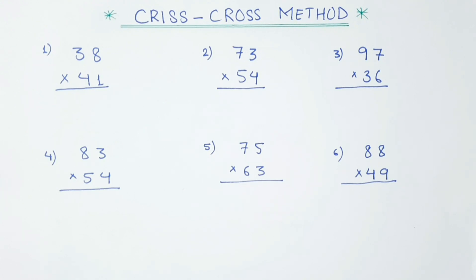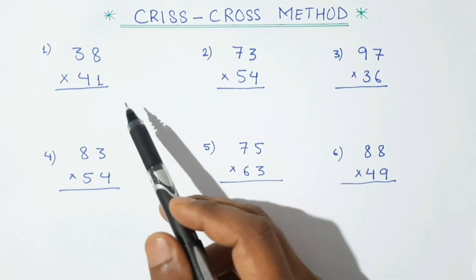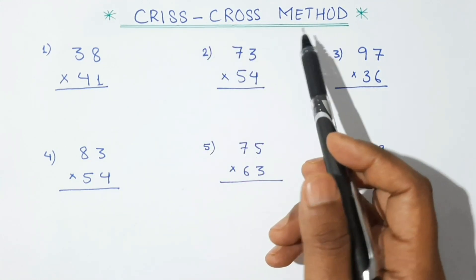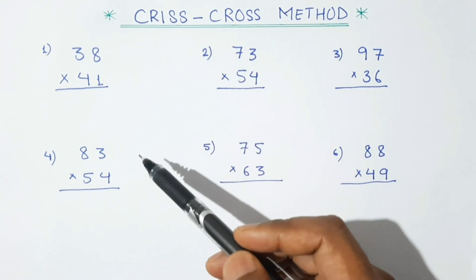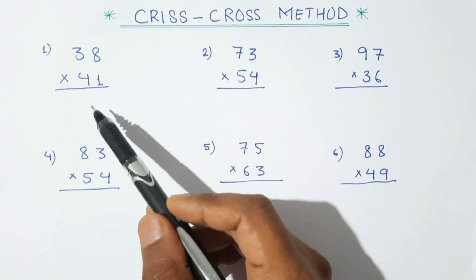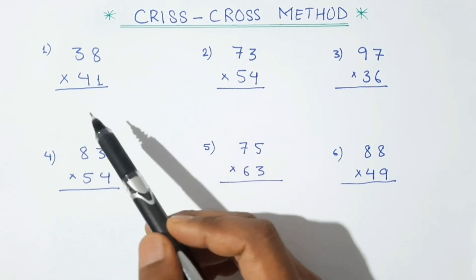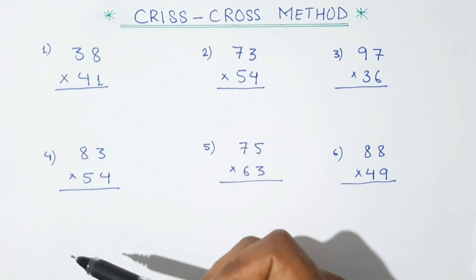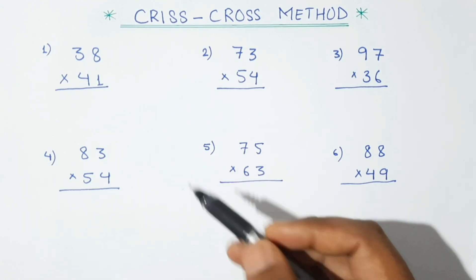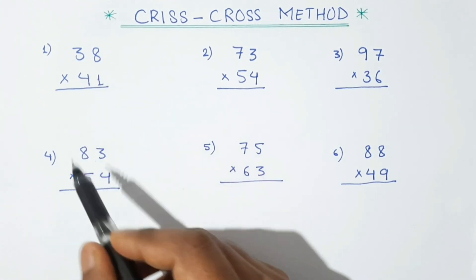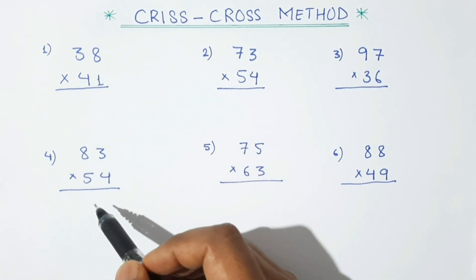Hello everyone, welcome to our math class. In this class we are going to multiply any two-digit number using the crisscross method. By using this method we can multiply any two-digit number just in one line and within a few seconds. So let's see — first one, we are multiplying 38 by 41.